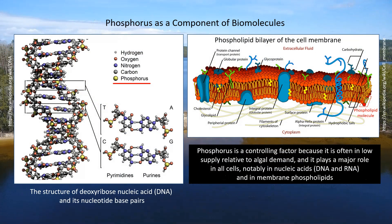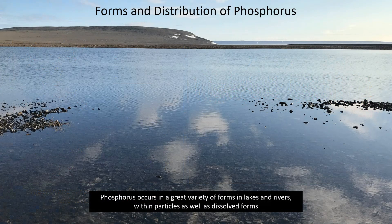Phosphorus is a controlling factor because it is often in low supply relative to algal demand, and it plays a major role in all cells, notably in nucleic acids, DNA and RNA, and in membrane phospholipids. Phosphorus occurs in a great variety of forms in lakes and rivers, within particles as well as dissolved forms.